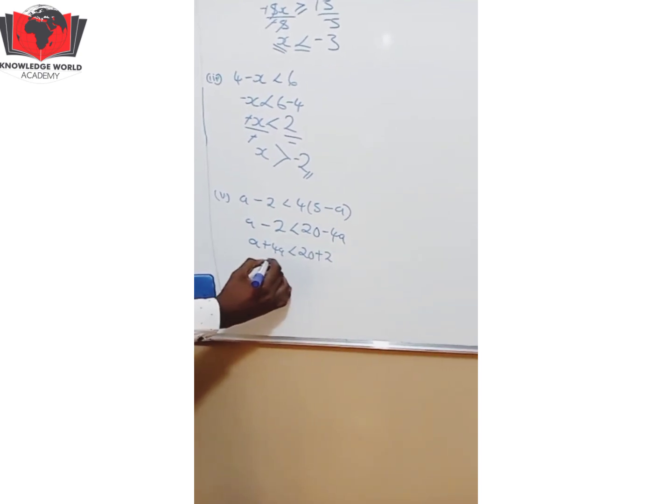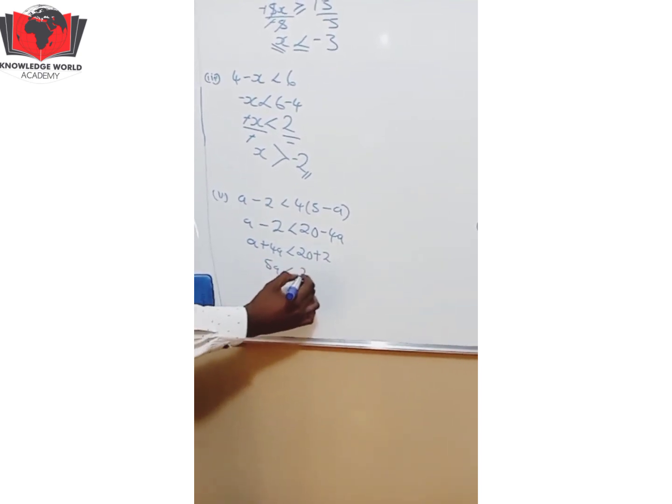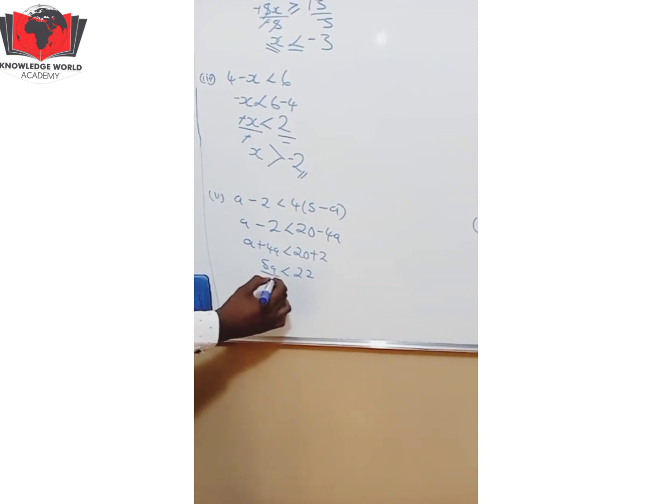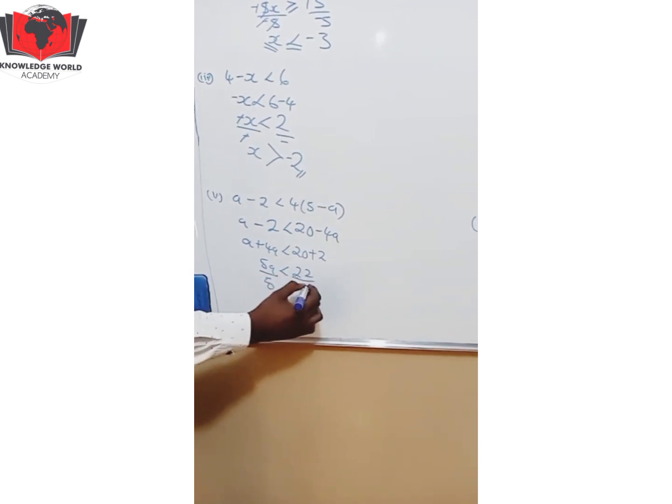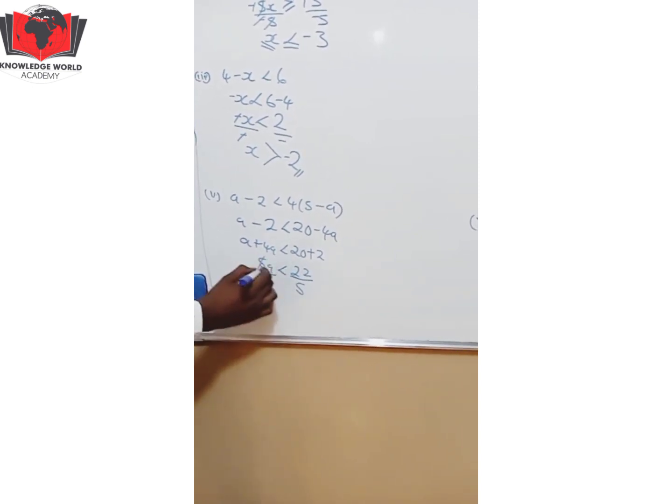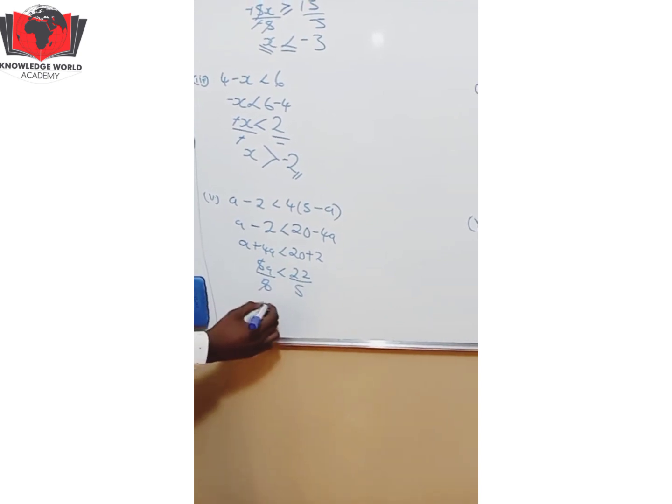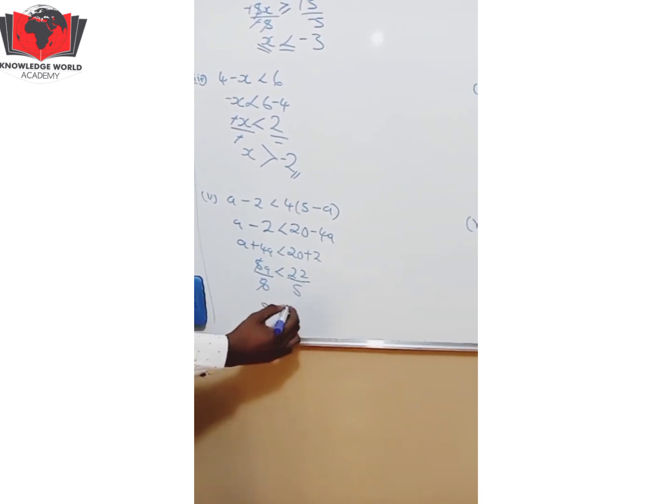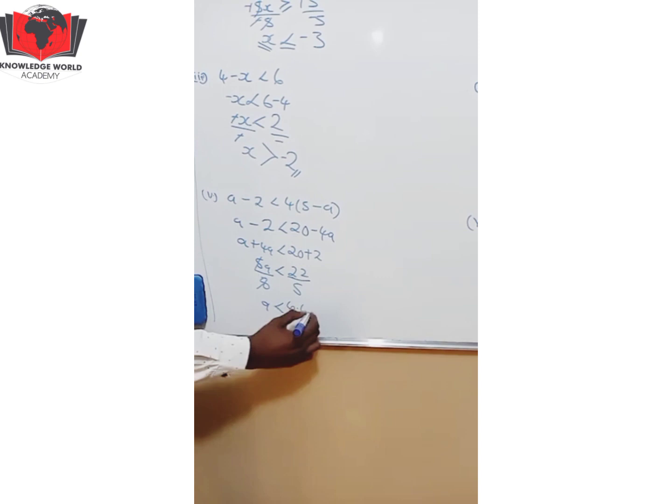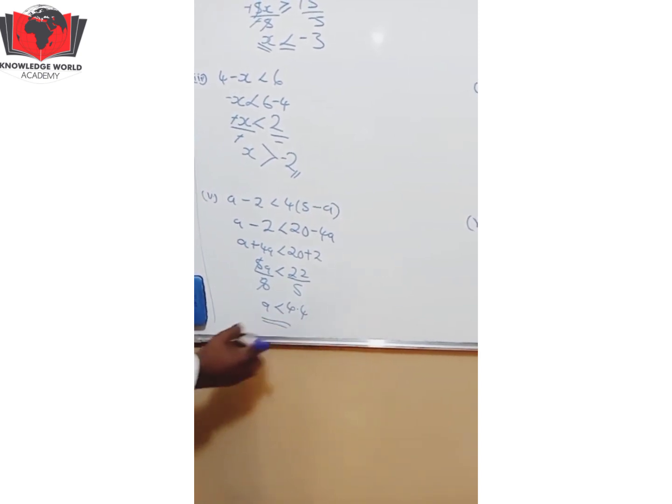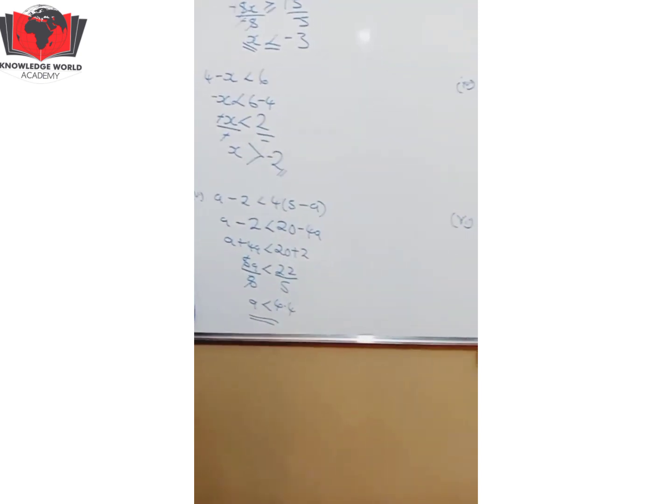So this will give you 5A < 22. Over 5, over 5. No sign is changing because you are dividing by a positive. So this will give you 4.4. Usually this is paper 2 so you can leave it to decimal places. Last example.